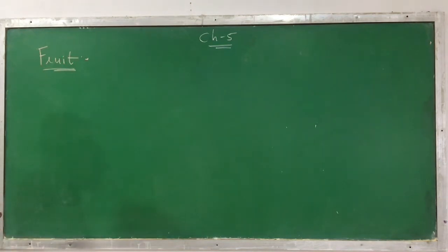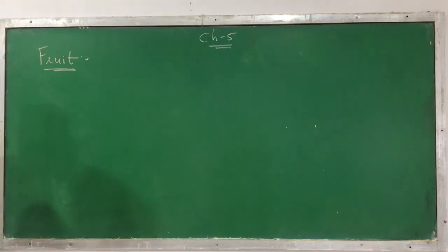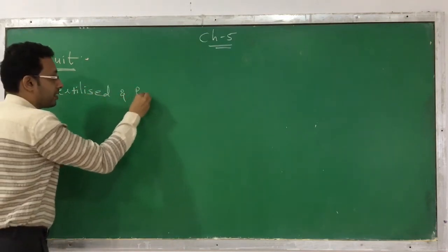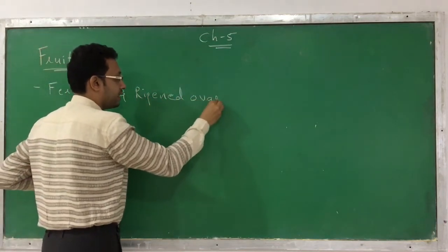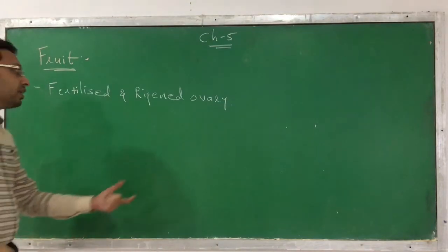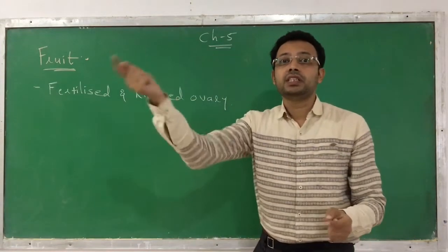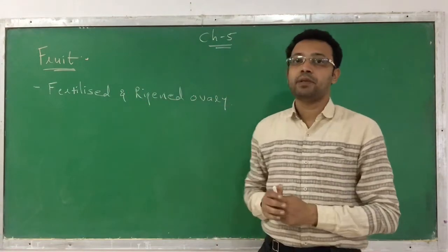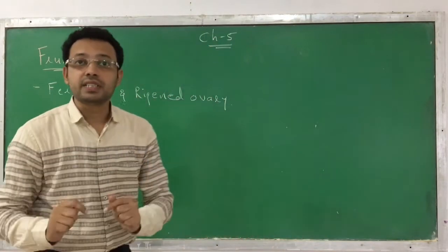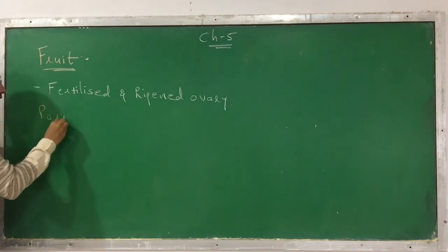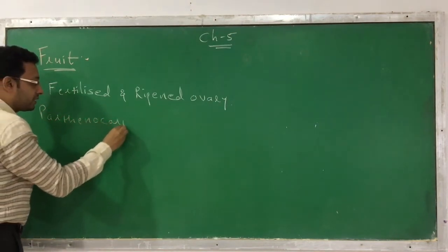In the flowering plant, the fruit is the result of fertilization. The ovary gets fertilized and that results in a fruit. So what is a fruit? It is a fertilized and ripened ovary. The ovary, which is part of a carpel or pistil, when it gets fertilized, converts into a fruit. But there are some exceptional fruits which are developed without fertilization.